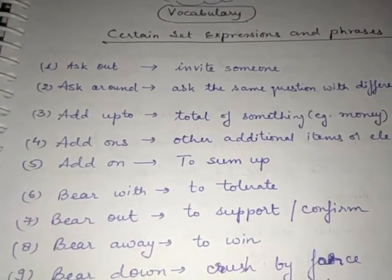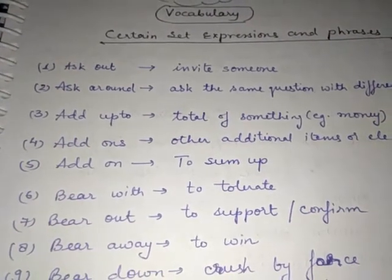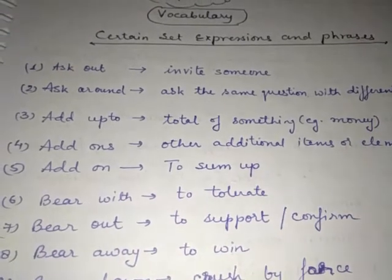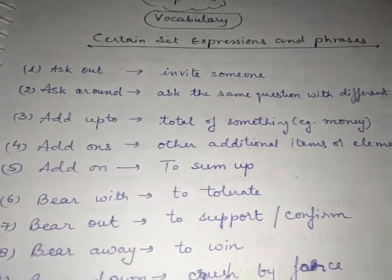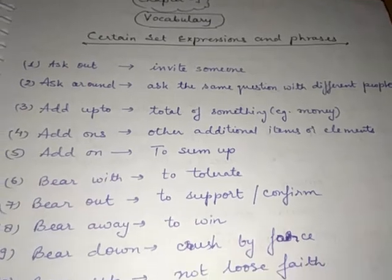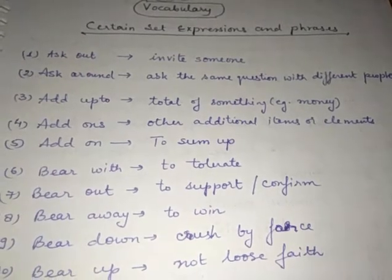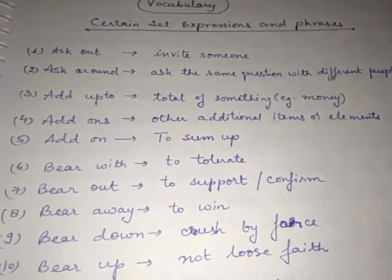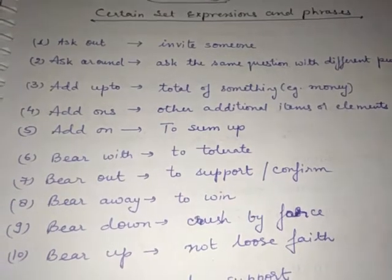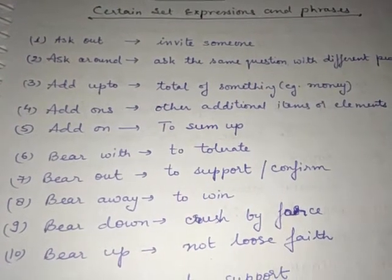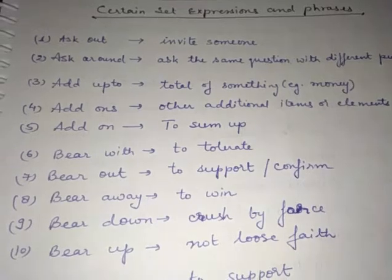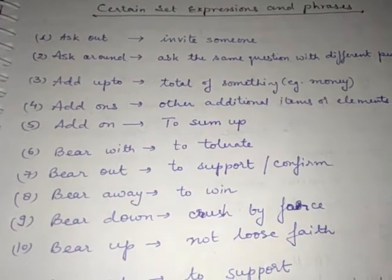First one is ask out, ask out means to invite someone. Ask around means to ask the same question with different people. Add up to means total of something, e.g. money. Add ons means other additional items or elements. Add on means to sum up.